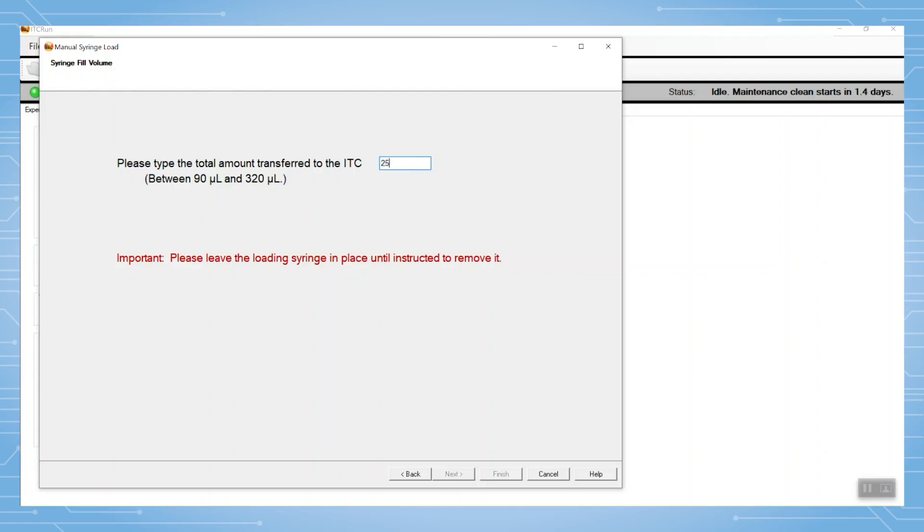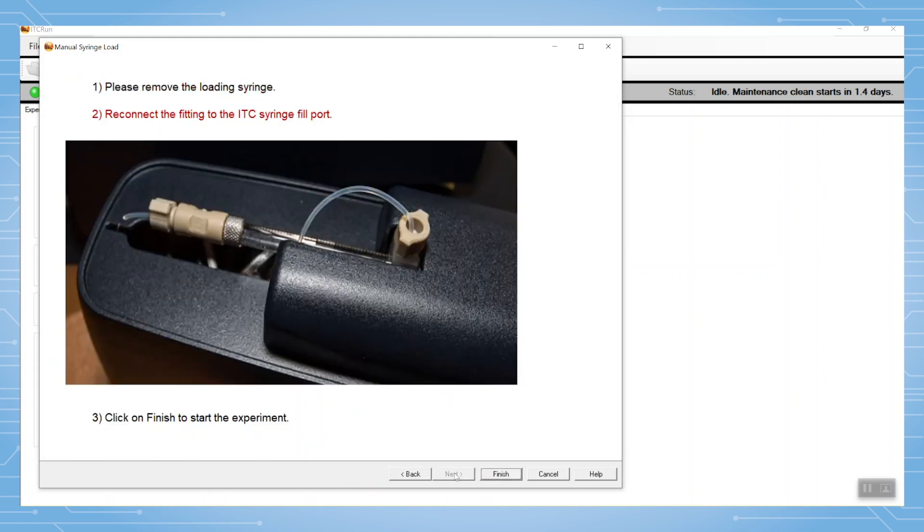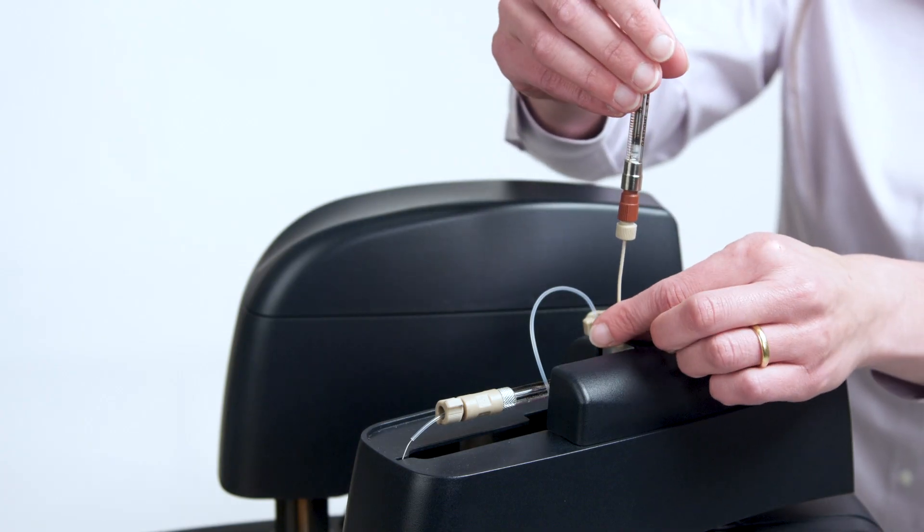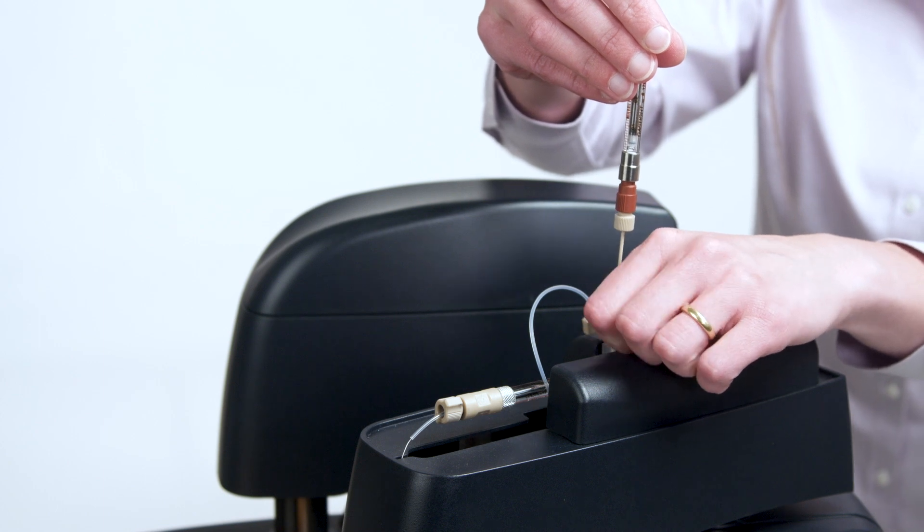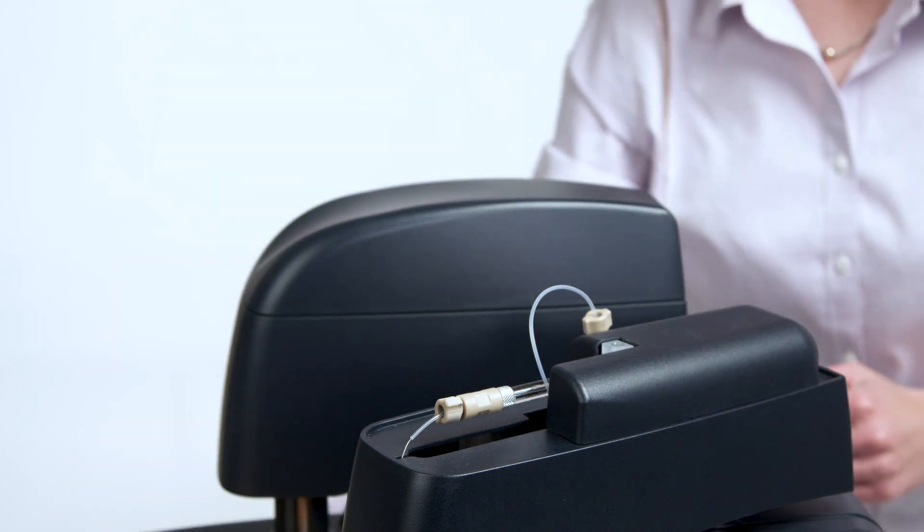Now the filling syringe is left in place and next should be clicked to progress in the wizard. The plunger then automatically moves to the correct position for the titration experiment and the pump is turned off.